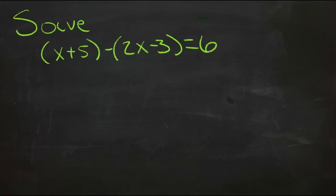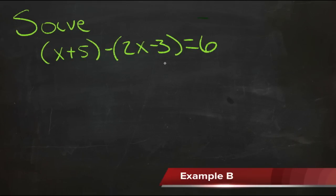Before we can actually solve this equation, we need to combine like terms so that we can put all the x's together and all the numbers together. But before we do that, we need to deal with this negative symbol right here.